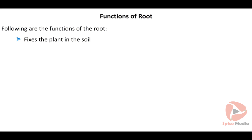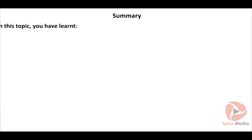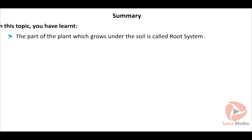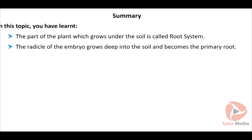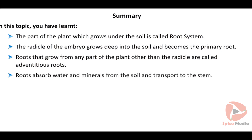Functions of the root: the primary function of the root is to fix the plant in the soil. It helps in absorption of water and minerals, storing food, and conducting water. It also helps in photosynthesis and respiration. The radicle of the embryo grows deep into the soil and becomes the primary root. Roots that grow from any part other than the radicle are called adventitious roots.